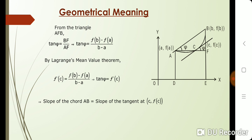In other words, there exists a point in the interval (a,b) which has a horizontal tangent. In fact, the Mean Value Theorem can be stated also in terms of slope. The number f(b) minus f(a) divided by b minus a is the slope of the line passing through the points (a, f(a)) and (b, f(b)). So, the conclusion of the Mean Value Theorem states that there exists a point such that the tangent line is parallel to the line passing through (a, f(a)) and (b, f(b)).